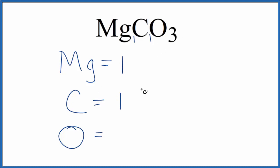And then the oxygen, we have three of those. If we add these up, we get three plus one plus one, a total of five atoms in magnesium carbonate.